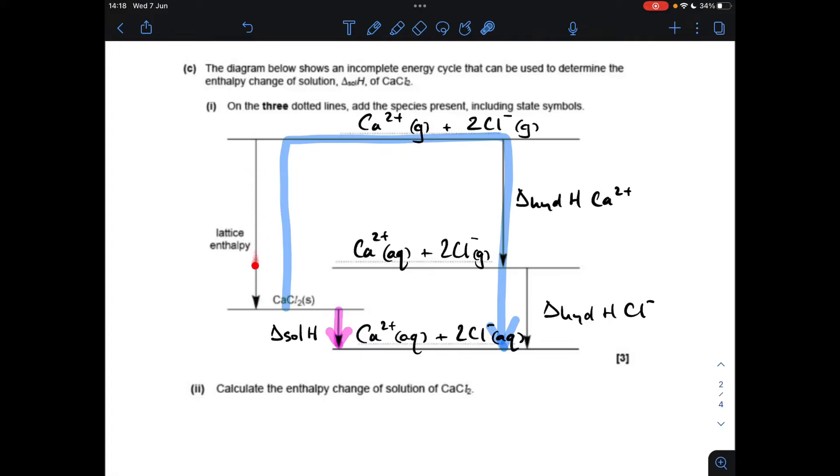You'll notice that the arrow for the lattice enthalpy is in the wrong direction for the route we want to go up, but that's coming down. So all we do is we subtract that, then add those two together because these two arrows are in the right direction. So ΔH_sol equals the sum of the hydration enthalpies minus this lattice enthalpy.